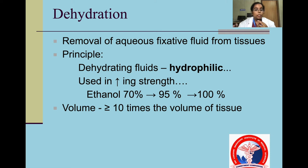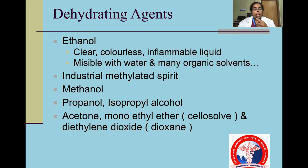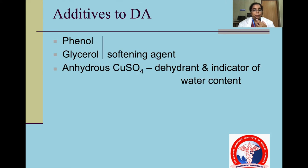The volume of the fixative should be equal to or more than 10 times the volume of the tissue. Ethanol is miscible with water and many organic solvents; it is clear and colorless but is an inflammable liquid. Other examples are industrial methylated spirit, methanol, propanol, isopropyl alcohol, acetone, and diethylene dioxide or dioxane. Additives that can be used with the dehydrating agent include phenol, glycerol and anhydrous copper sulfate.